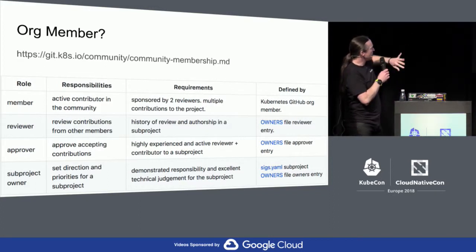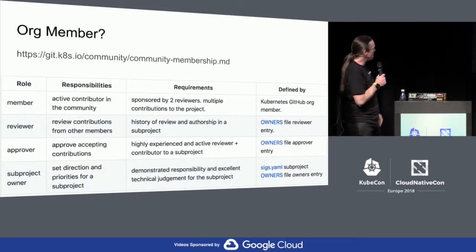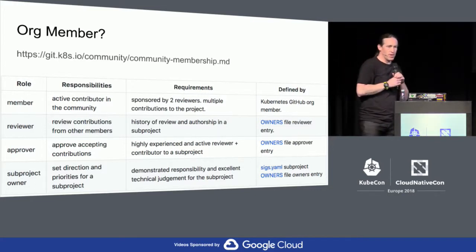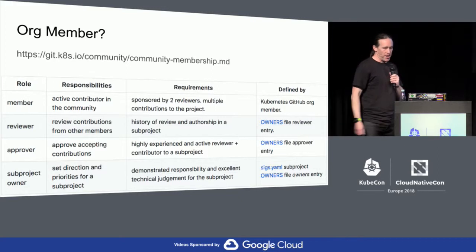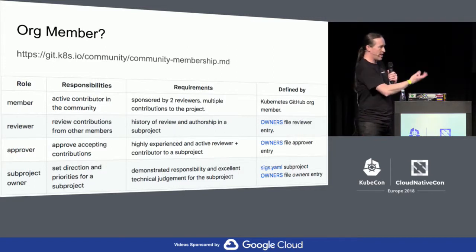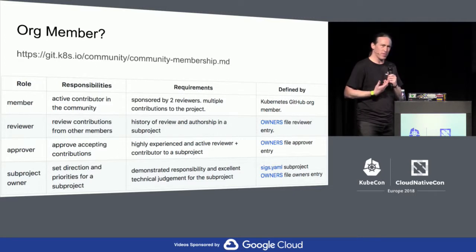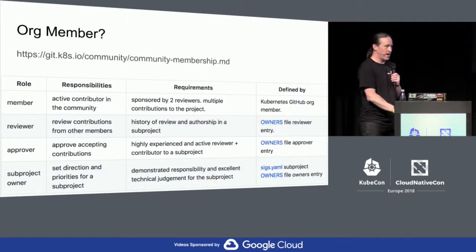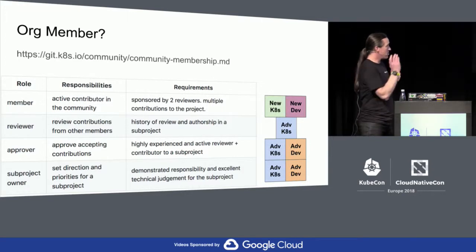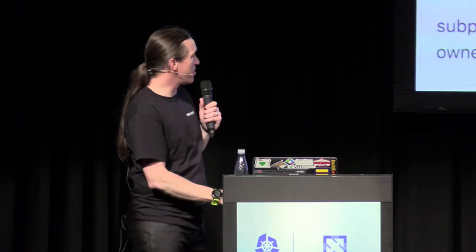The other three levels are what we call the contributor ladder. As you work your way up beyond being a member, the other three levels really start to come into ownership — you're taking ownership over areas of code. What we really want in open source is to avoid the tragedy of the commons: shared code that nobody owns, nobody's responsible for, and that dies off over time. The ladder helps ensure we have clear ownership for those reasons.